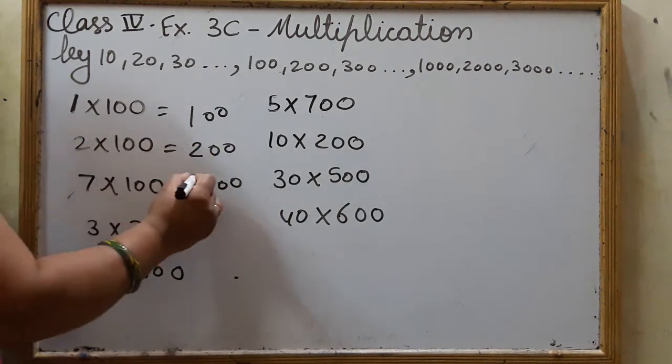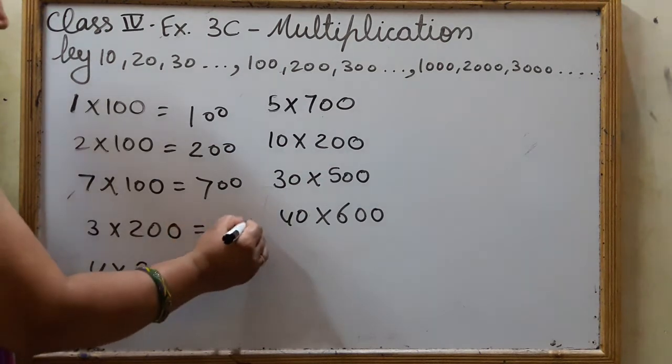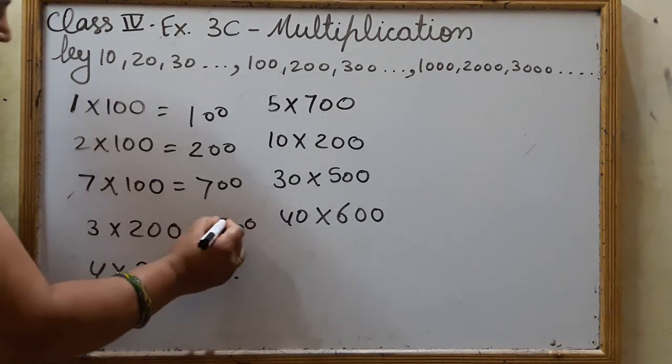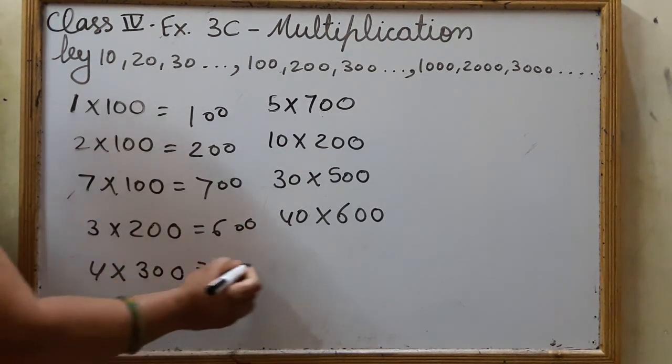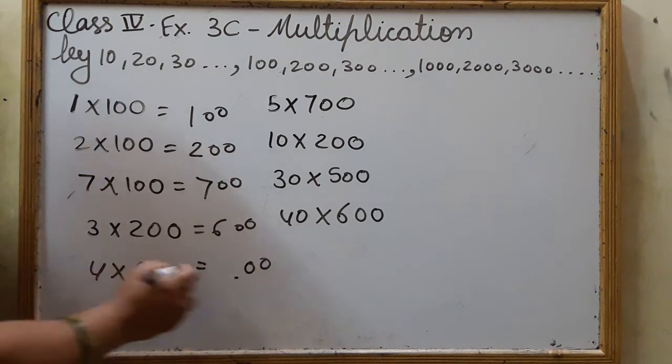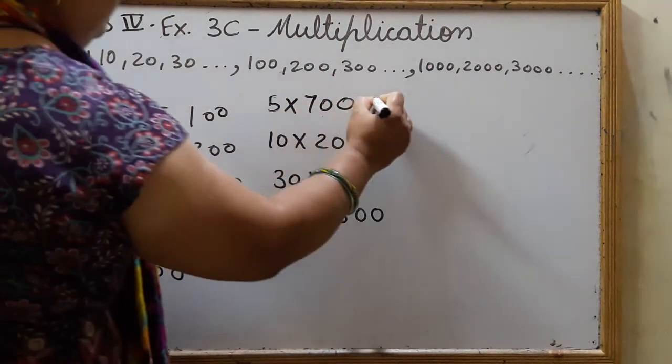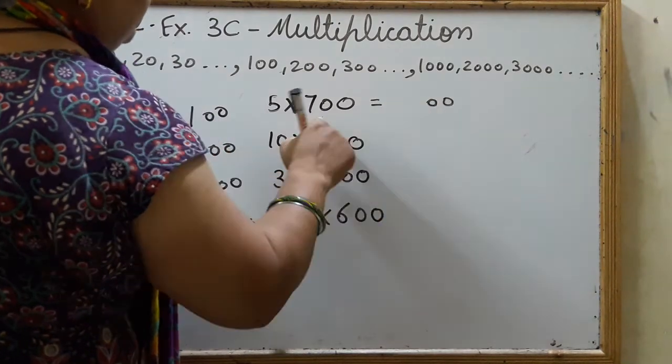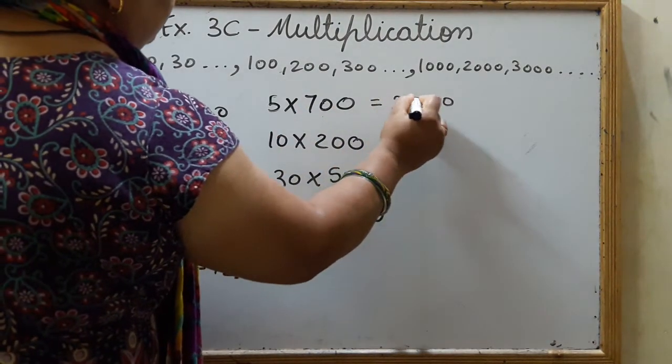Double zero, 7 1s are 7. Double zero, 3 2s are 6. Here are also 2 zeros. 3 4s or 4 3s, both are 12. Double zeros and 5 7s are 35.